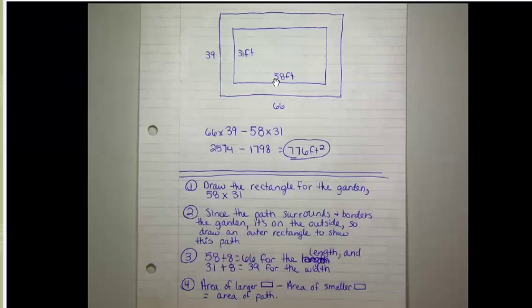And the same thing for this 58, but there's 4 feet here and 4 feet here, so 58 plus 8 is 66. To find the area of this path, I need to take the area of the larger rectangle minus the area of the smaller rectangle. So 66 times 39 minus 58 times 31. 66 times 39 is 2,574, and 58 times 31 is 1,798.